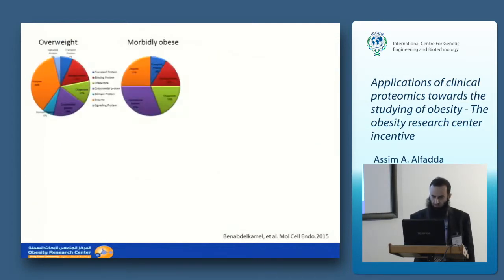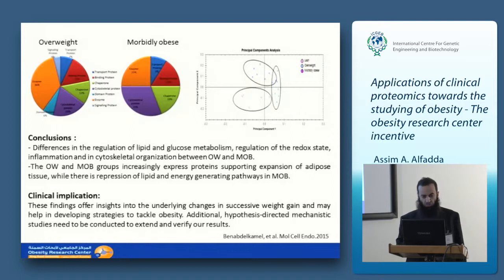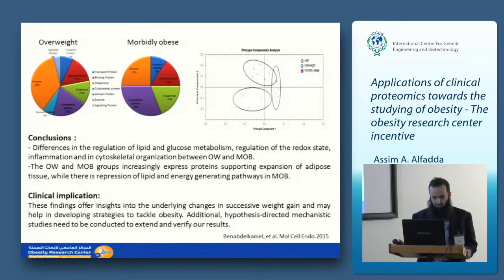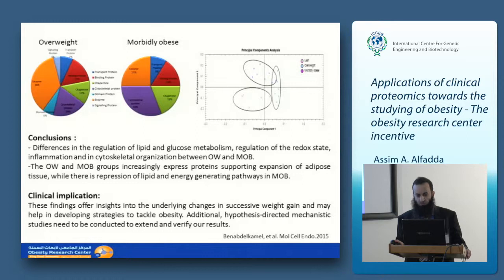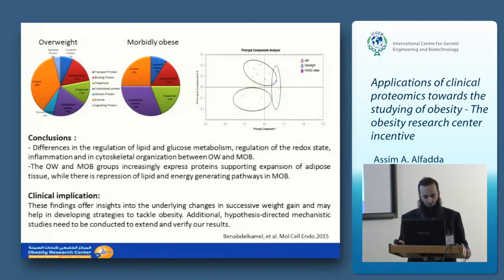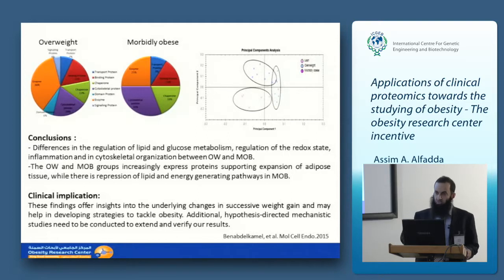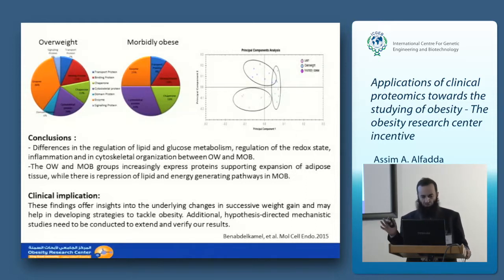Clustering of the three conditions — lean, overweight, and morbidly obese — shows them as distinct from each other. We concluded that differences exist in regulation of lipid and glucose metabolism, redox state, inflammation, and cytoskeletal organization between overweight and obese states. Overweight and morbidly obese groups increasingly express proteins supporting adipose tissue expansion, while there is a repression of lipid and energy-generating pathways in the morbidly obese. Additional studies are needed to understand the mechanisms behind these protein expression changes.